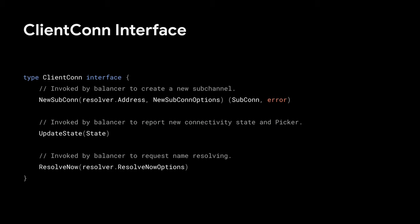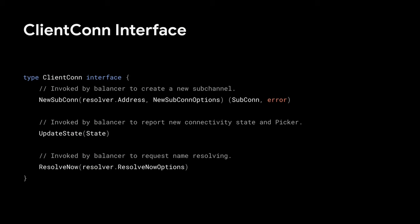The next interface is what we call the client conn interface — called helper in Java and control channel helper in C++. This is implemented in the gRPC client, and LB policies use it to communicate with the channel. The first method, new subcon, is used when the LB policy wants to create a new subchannel, and it can pass a bunch of options. The next is update state — whenever the LB policy's state changes and it wants to generate a new picker, it uses this API. The last one is used when the LB policy wants to request re-resolution of the name, for example, if it wasn't able to connect to any of the given backend addresses.